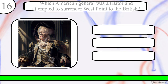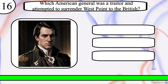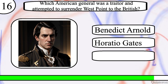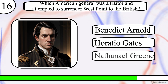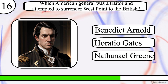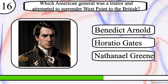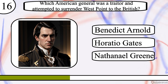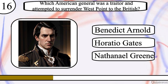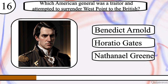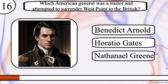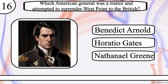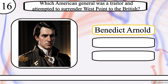Question 16. Which American general was a traitor and attempted to surrender West Point to the British? Benedict Arnold, Horatio Gates, or Nathaniel Green? The correct answer is Benedict Arnold.